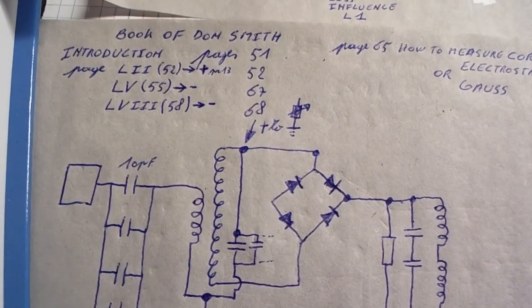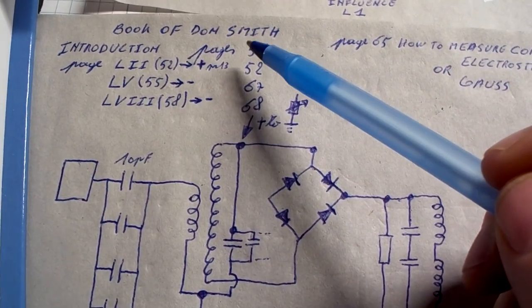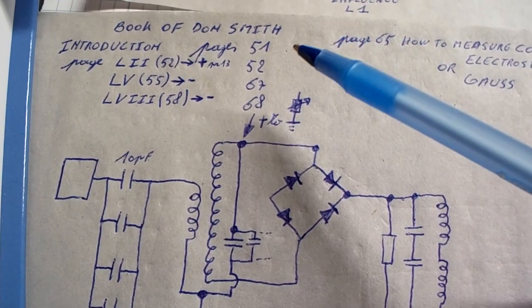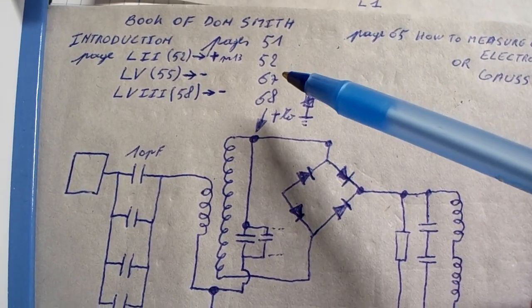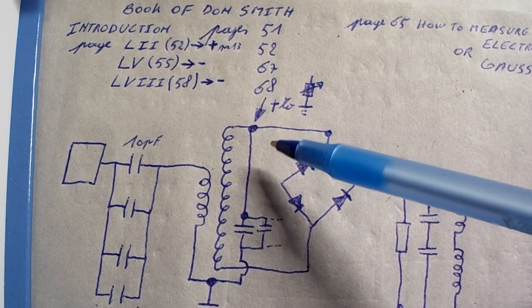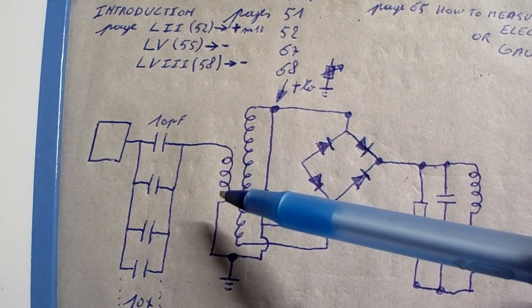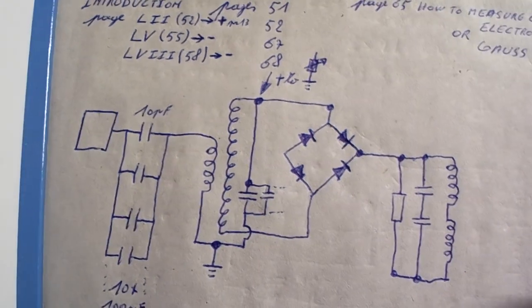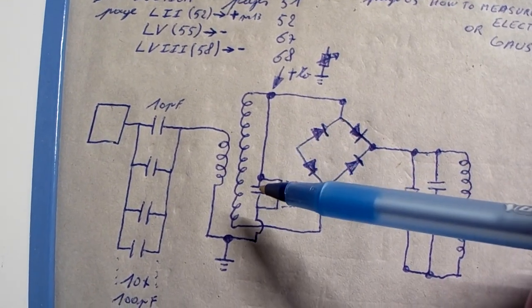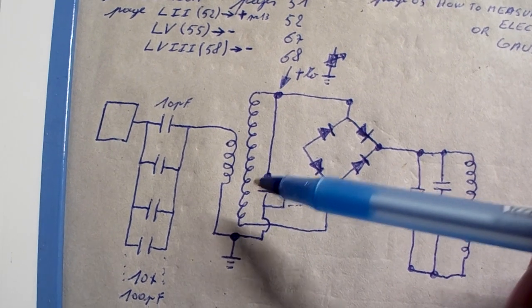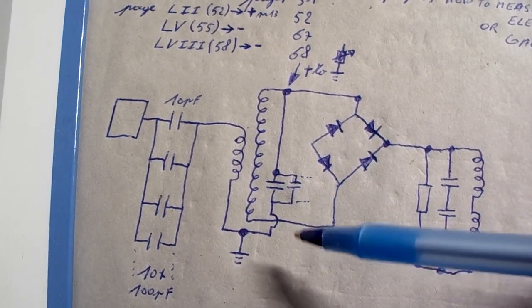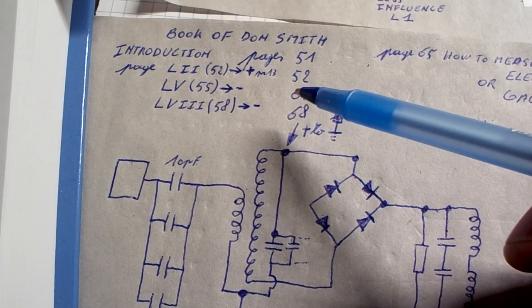Now when we look in the book of Don Smith by Rick Friedrich, I saw that there is also made a difference where the earth ground is made to the polarity on the circuit. So normally I thought that it was to the negative that the ground connection was made. But there is a difference in some schematics.